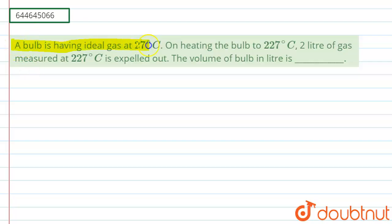It is given a bulb is having ideal gas at 27 degrees Celsius. On heating the bulb to 227 degrees Celsius, 2 liters of gas measured at 227°C is expelled out. The volume of the bulb in liters is...